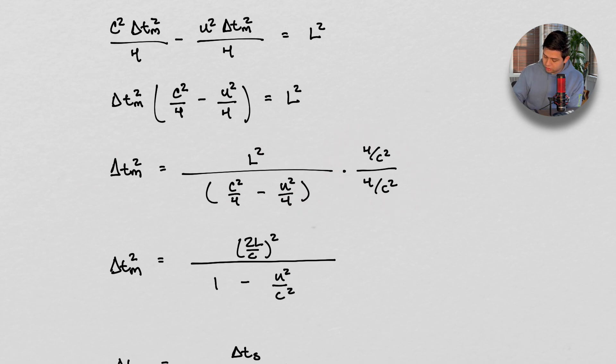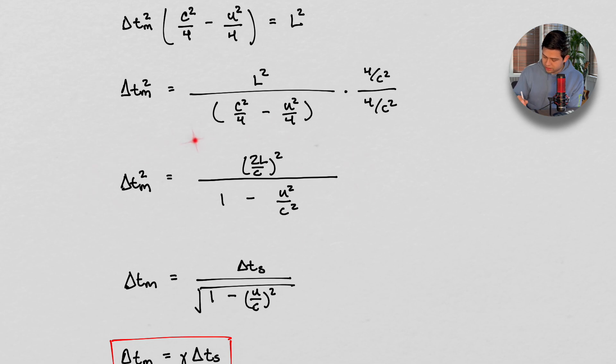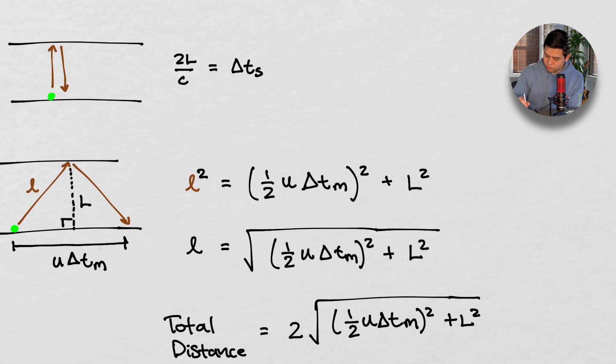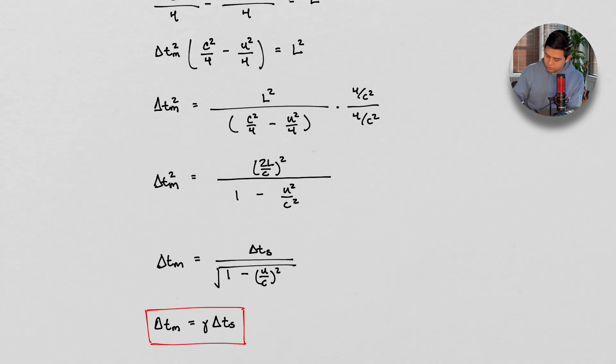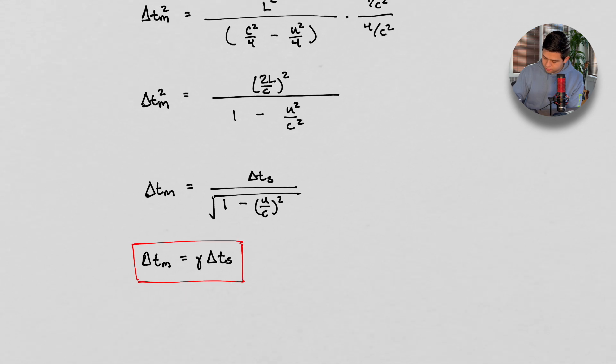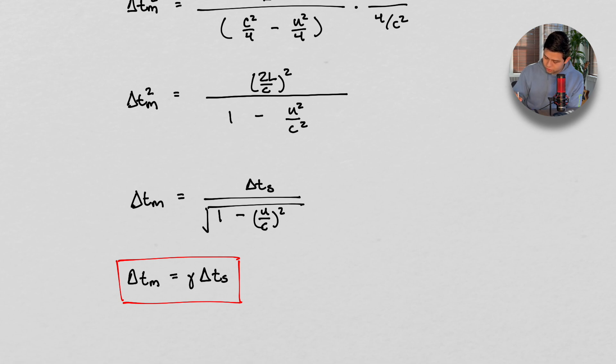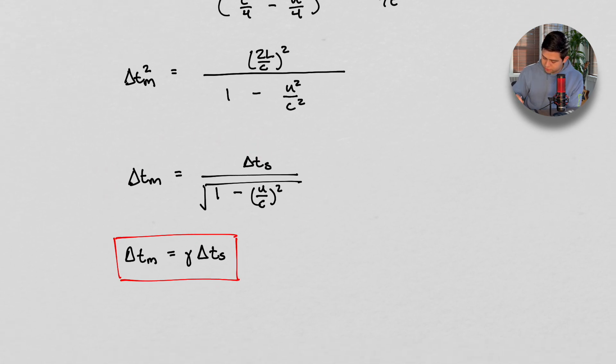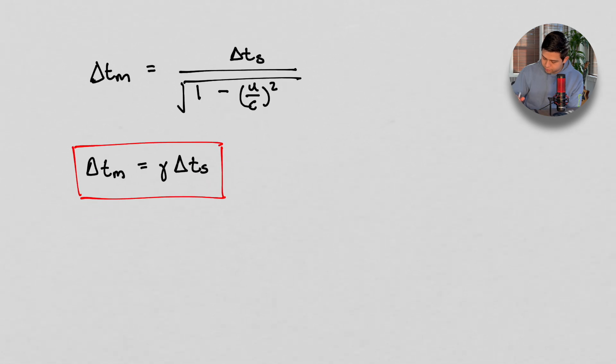We're multiplying by one. And when we multiply by one, we get all of this. And notice how two L over C, well that's the same thing as two L over C up here, which is the same thing as the time as if we were standing still, or as if the particle was standing still. So the particle is standing still, and then we take the square root of both sides. So we take the square root of both sides, we get this, and lo and behold, we get this is our time dilation formula.